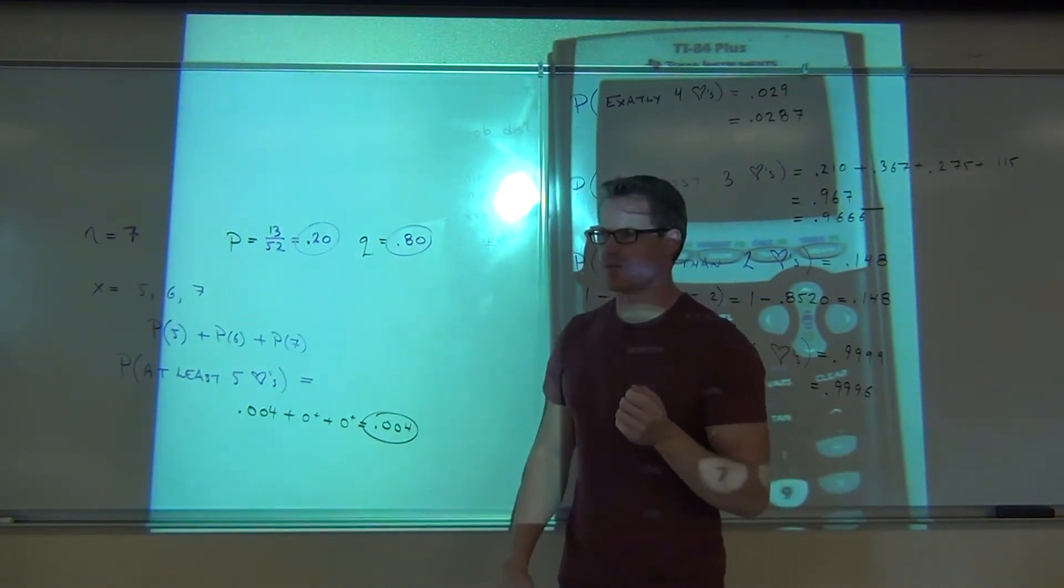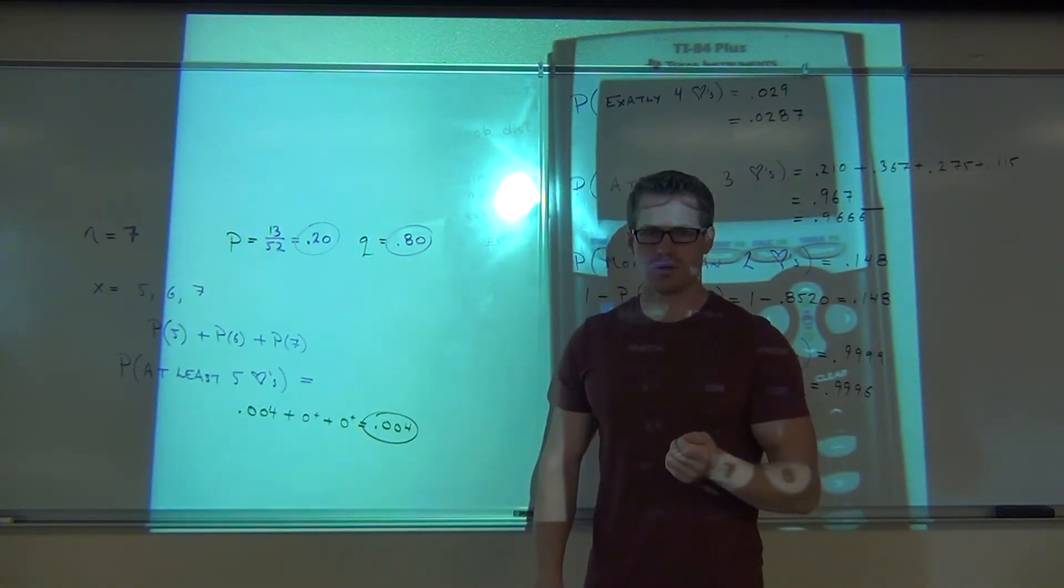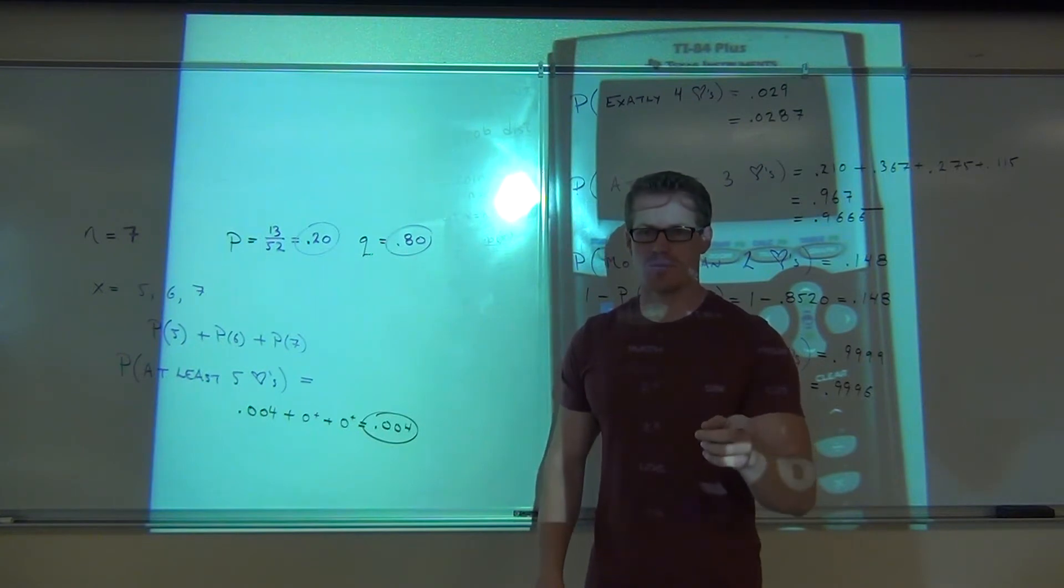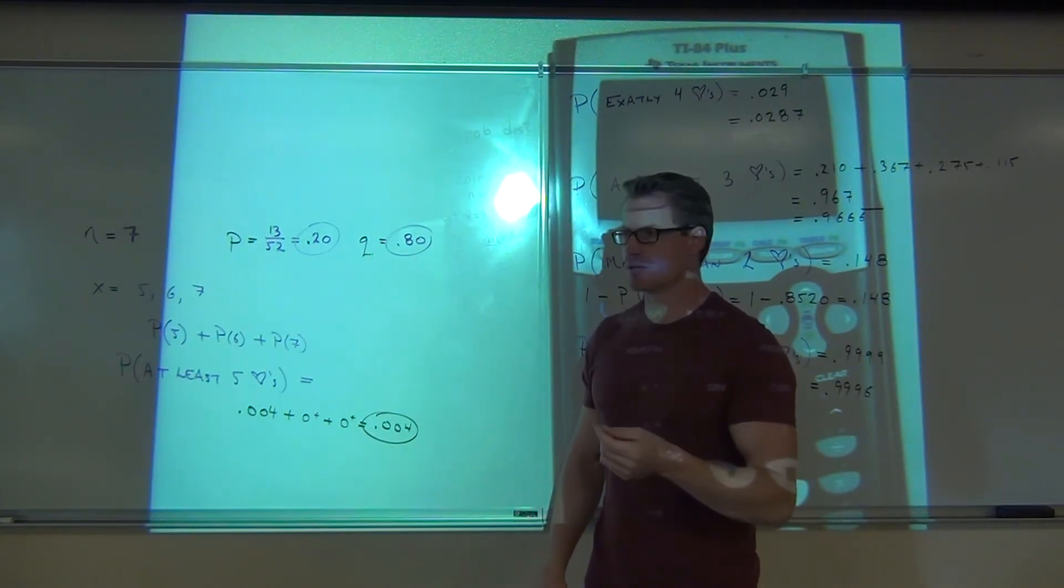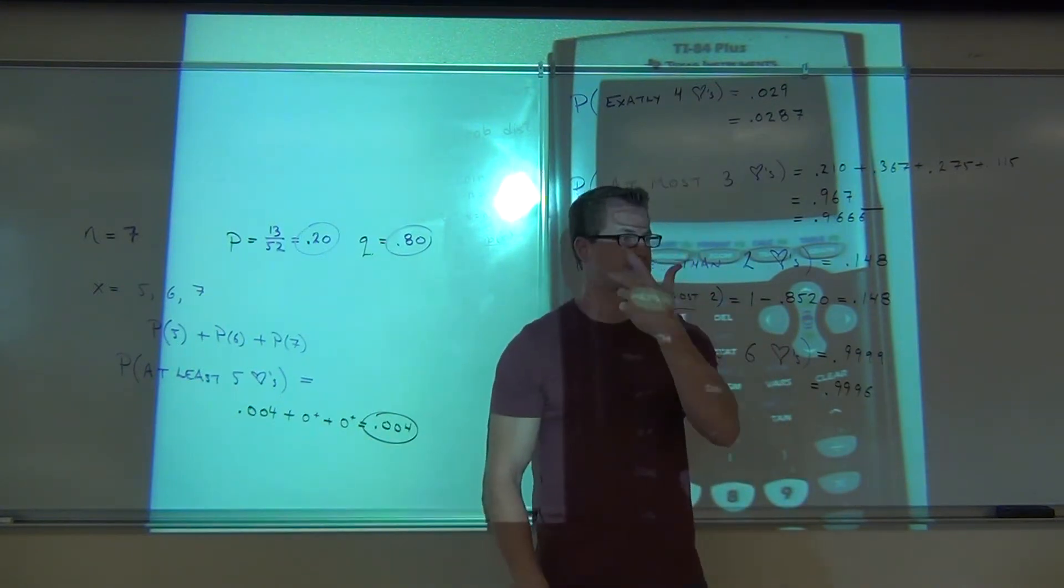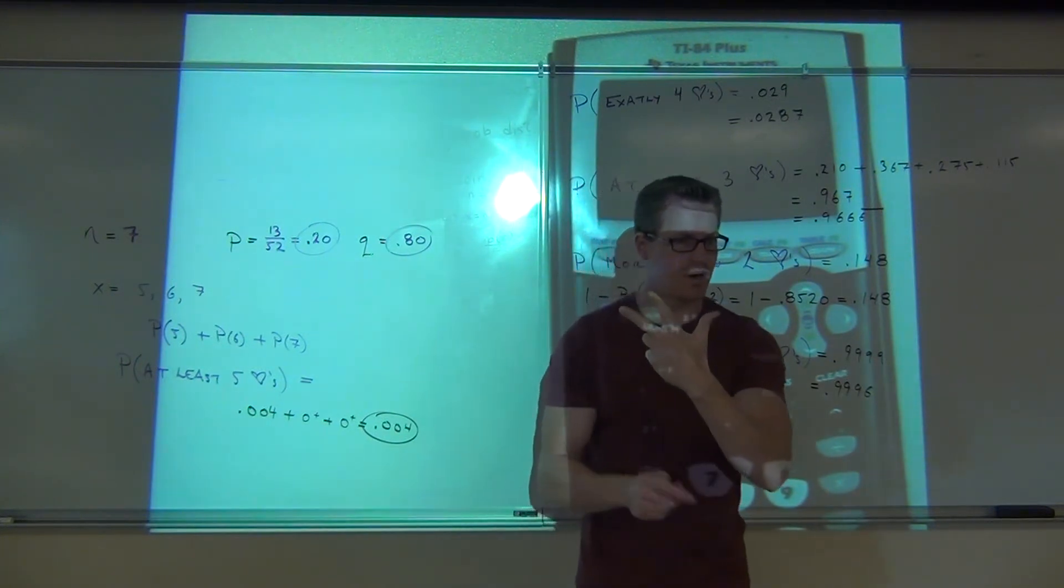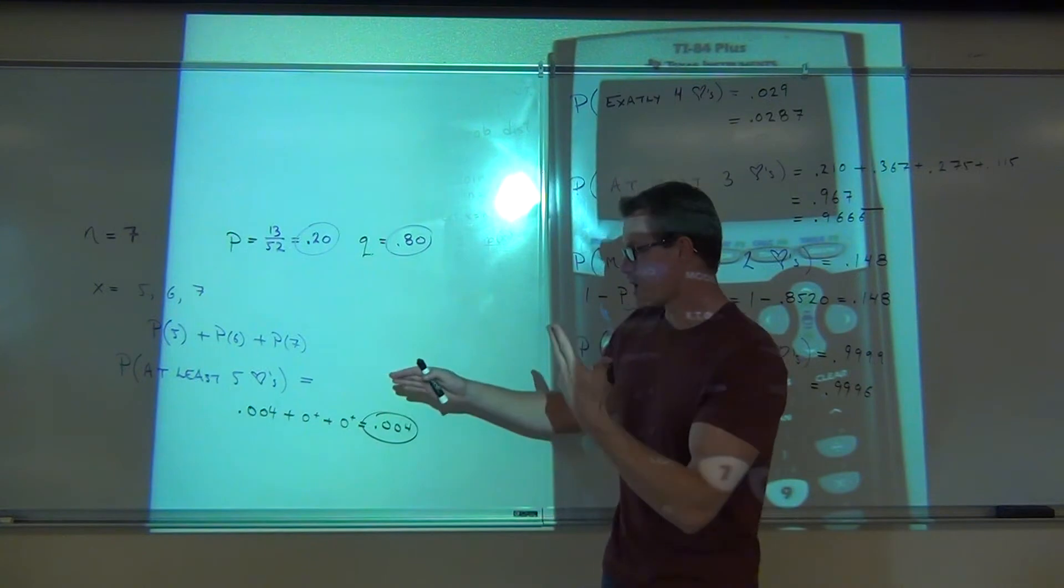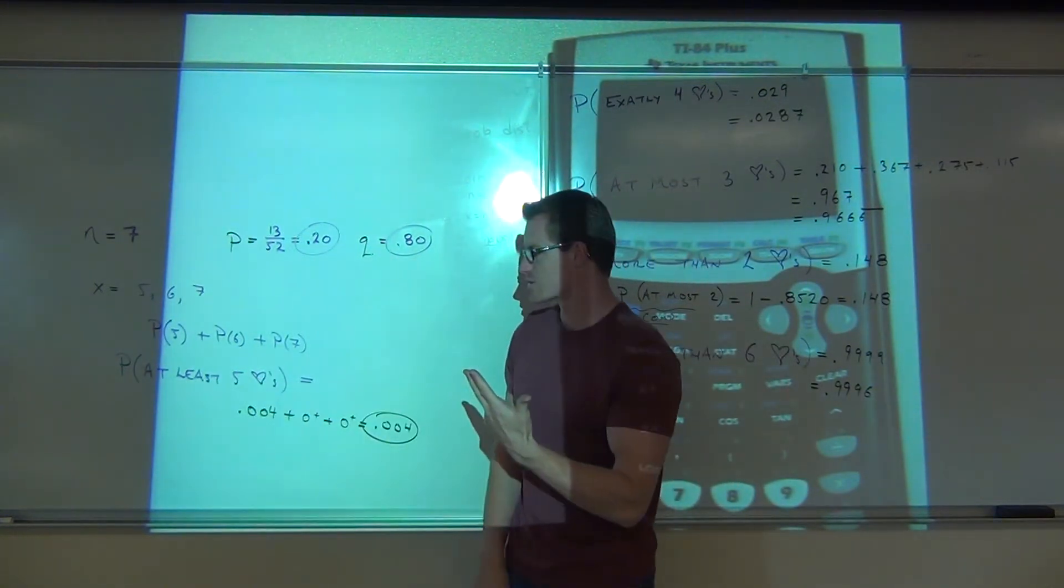At most? Okay, the complement would be at most four. But what's at least five mean? Does it include the five or not? Yeah, five six seven. What's the opposite or complement of five six seven? Zero to four. So the complement of at least five parts is at most four.